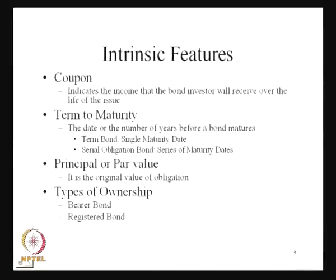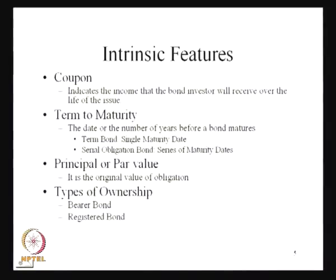Another bond is the serial obligation bond. In the context of serial obligation bond, a series of maturity dates will be there and on the basis of different amounts mentioned in the bond document, the bond matures in parts over time — after maybe two years this part of the bond will be matured, then after another two years this part of the bond will be matured. So we have two ways to define the term to maturity: one is your term bond, which has a single maturity date, and we have the serial obligation bond, which talks about a series of maturity dates.